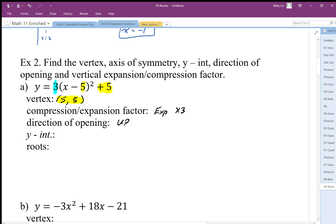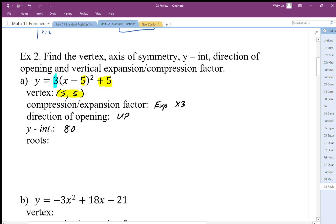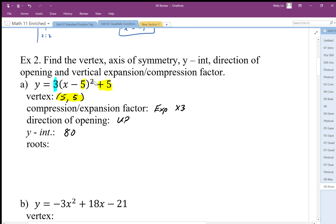The y-intercept, now because this is in the graphing form, we cannot say that the y-intercept is that last number. We have to plug in zero. So when we plug in zero, we're going to get 25 times 3 plus 5, so the y-intercept works out to be y equals 80. And then the roots, we have to find the roots.